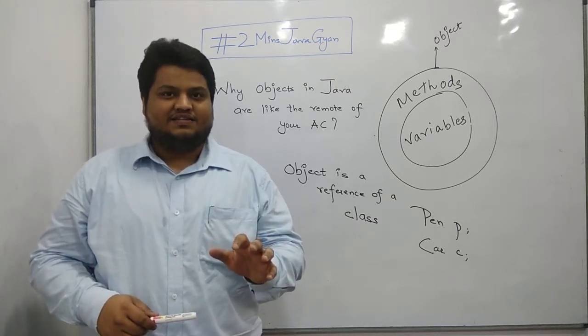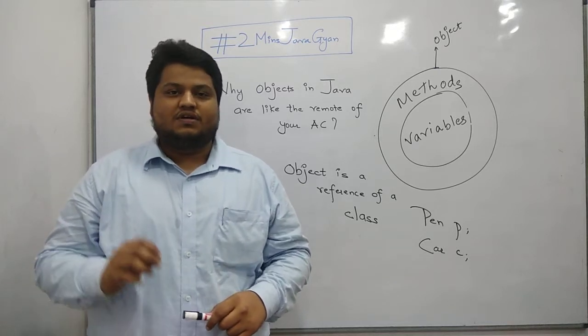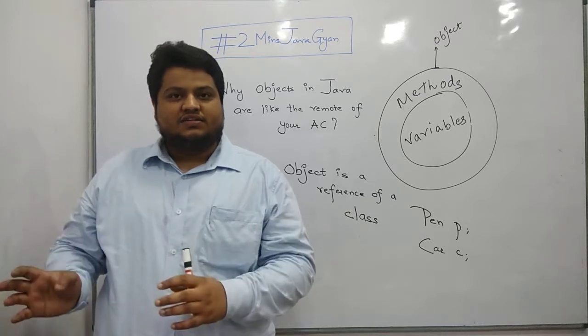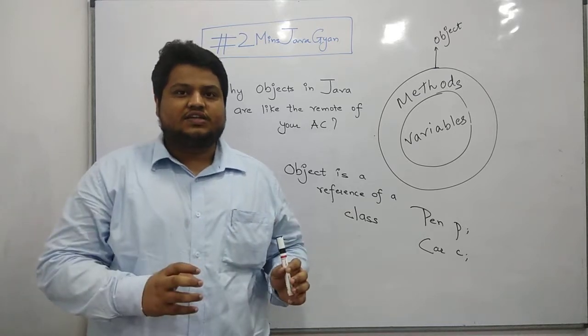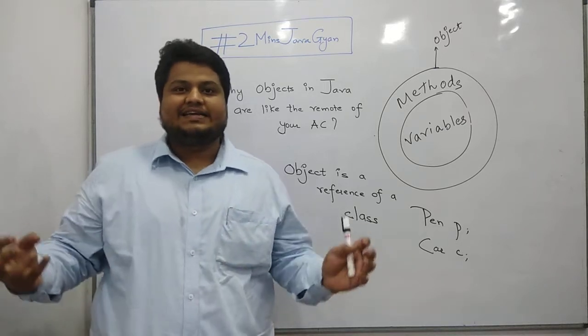So before understanding that concept, let us have a quick review on what an object is all about. Object in Java is basically a reference type. It's not a class, but it is a reference of a class. In short, a representative providing you a concept about an entire entity.